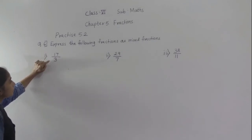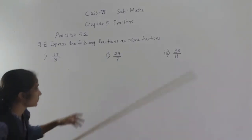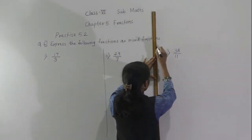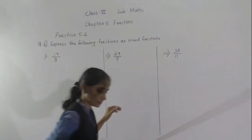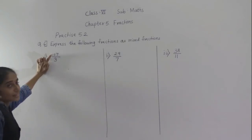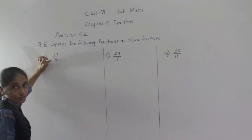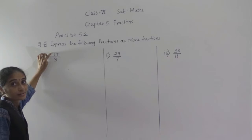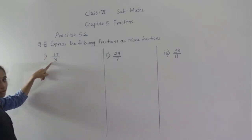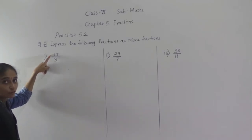First one: 17 upon 3. Now, this fraction is which type of fraction? It is an improper fraction. See, the numerator is greater than the denominator, so this is an improper fraction.